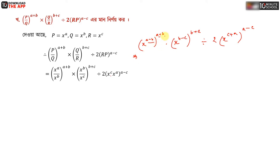The power becomes a minus b into a plus b, which is a squared minus b squared. Then x to the power a squared minus b squared, times x to the power b squared minus c squared.